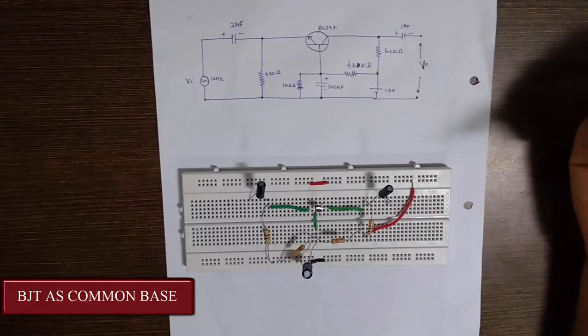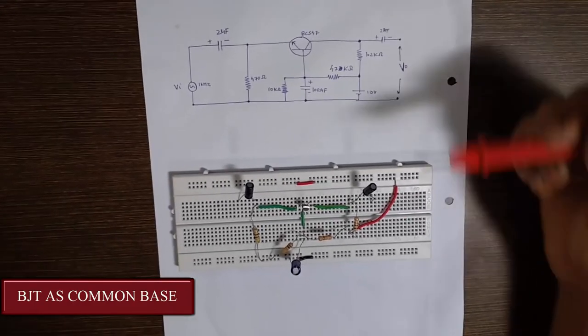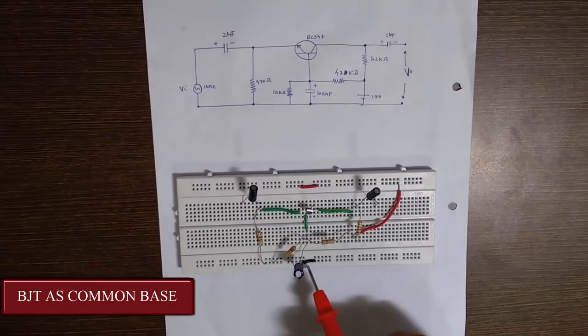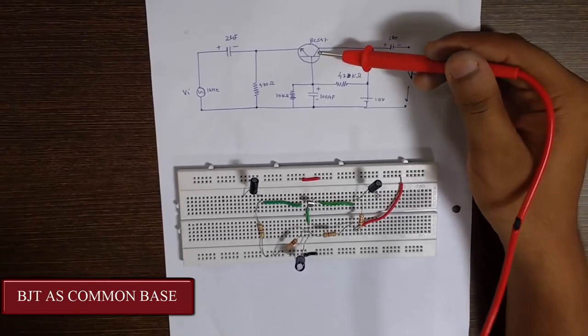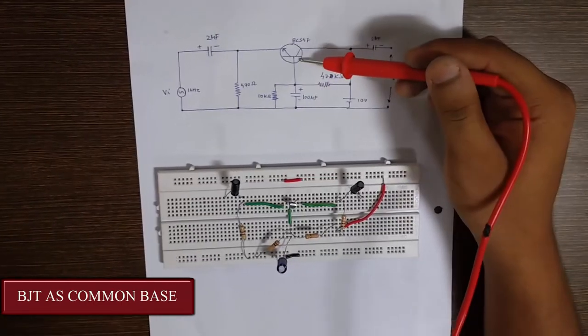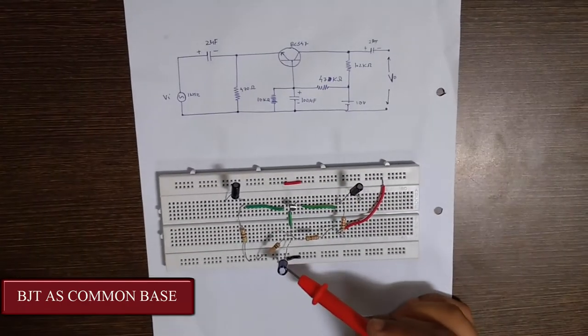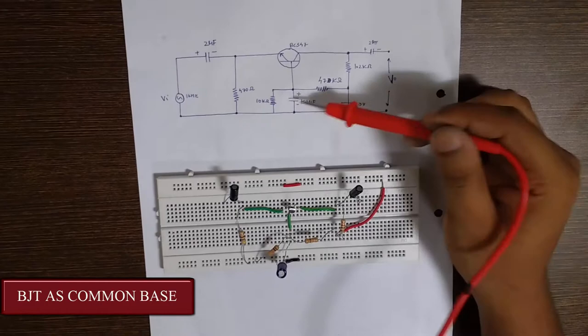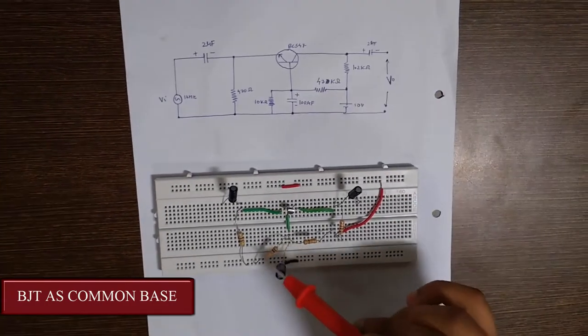Now let us implement on breadboard. This is the circuit implementation of Common Base Amplifier. This circuit is implemented in this way on the breadboard. As we know it is a Common Base Amplifier, the base is grounded through this 100 microfarad capacitor and parallel to that there is a 10k ohm resistor. So this is the 10k ohm resistor.